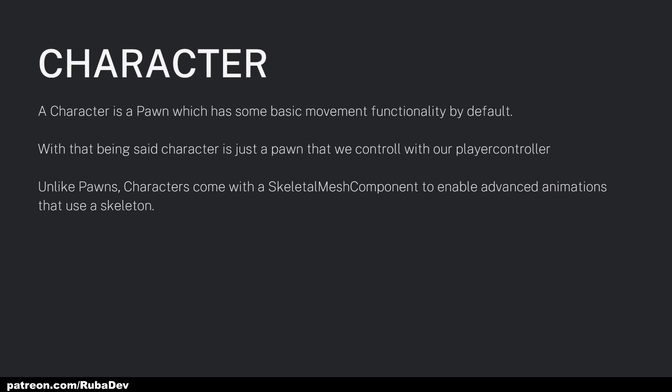First, what is a Character? A Character is a Pawn which has some basic movement by default, so we don't have to reinvent the wheel because Unreal Engine gives us some stuff to work with from the start. That's the main difference Character has from a Pawn. Character also comes with a Skeletal Mesh component, which enables us to use advanced animations that use a skeleton.